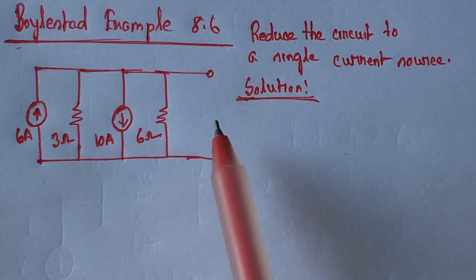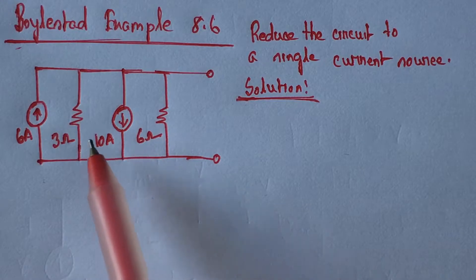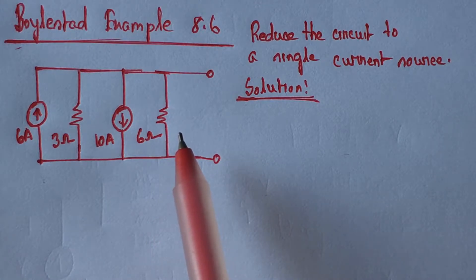For solving this type of problem, we can simply add the value of current sources if the currents are flowing in the same direction, and we can subtract current source values if currents are flowing in opposite directions.